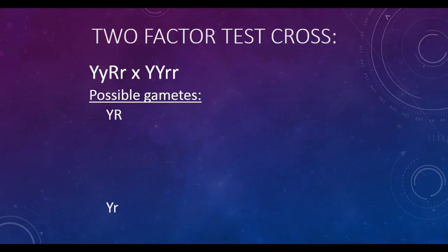Big Y, big R; big Y, little r; little y, big R; little y, little r. Our two-factor test cross has different possible gamete combinations based on our two sets of parents here.